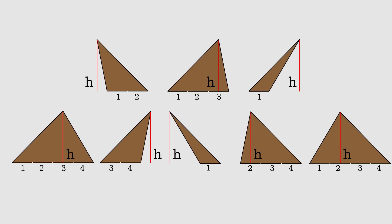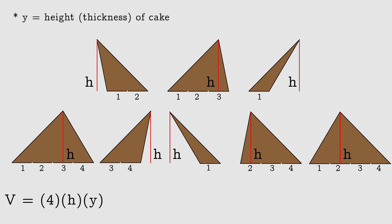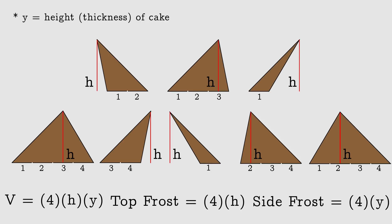This implies that each person gets the same volume of cake and the same amount of top frosting. They all get the same amount of side frosting — namely four segments times the height of the cake. So everyone gets the same amount of cake and frosting.